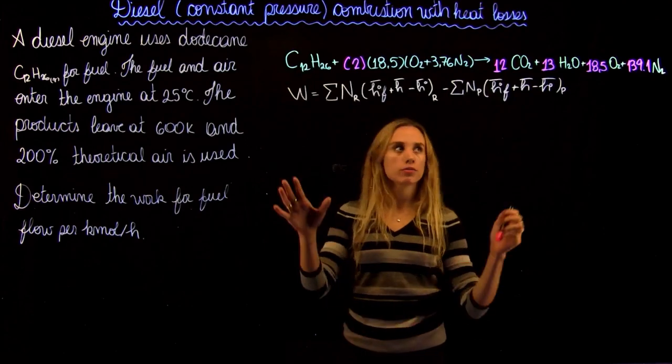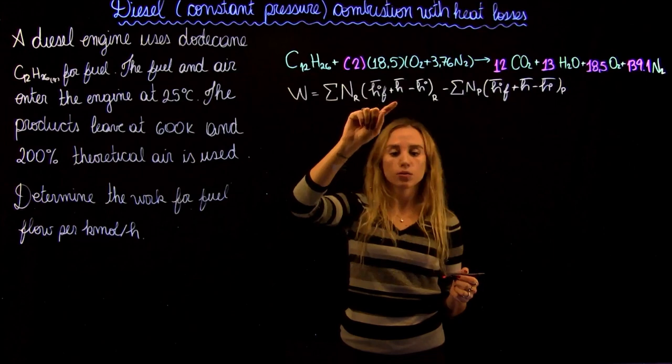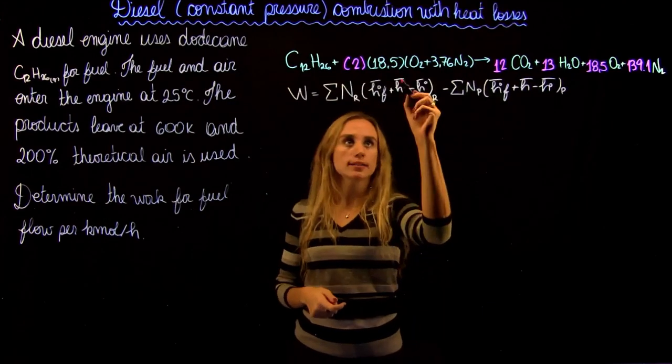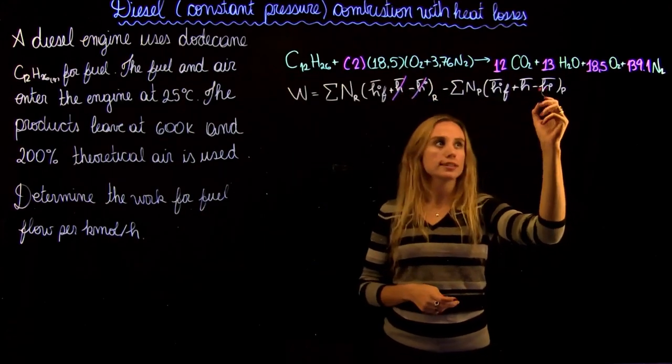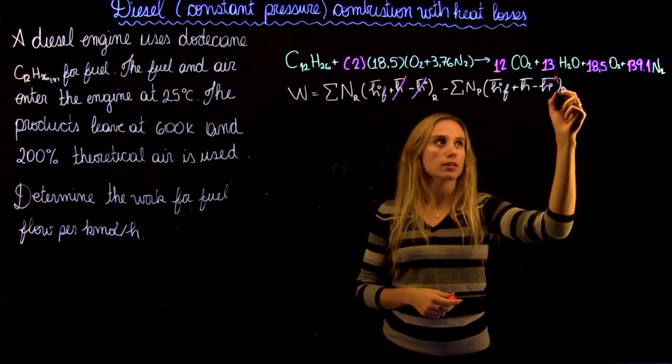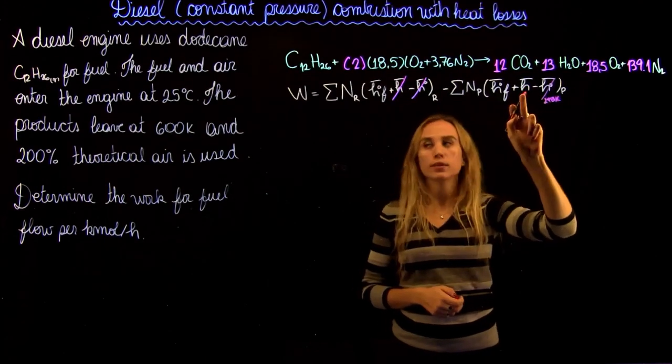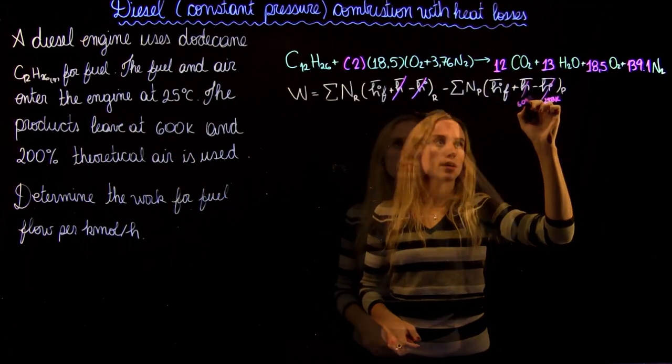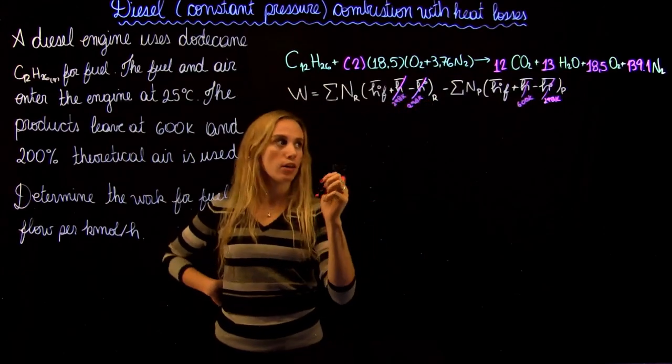So now we need to find the enthalpy for all the compounds. For our reactants, the reference temperature and the reaction temperature is the same, so these are going to cancel out. The reference temperature for the product is 298 Kelvin and the product temperature is 600 Kelvin. So now we have to find all the enthalpies.